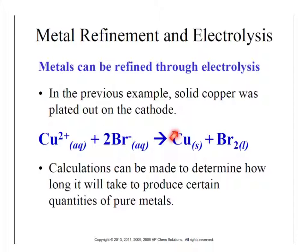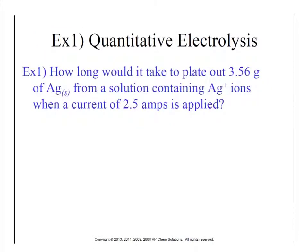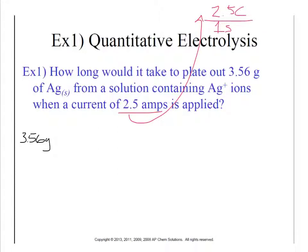Good news: it's just a stoichiometry problem. Bad news: it uses some new conversion factors we've got to learn. If we have a silver solution and the question is how long it would take to deposit 3.56 grams of silver from an Ag⁺ solution applying a current of 2.5 amps — our starting point is the 3.56 grams. Remember: amps means coulombs per second, so 2.5 amps is 2.5 coulombs for every one second.